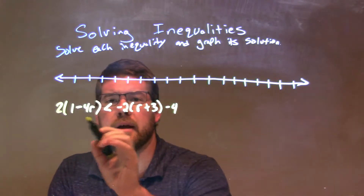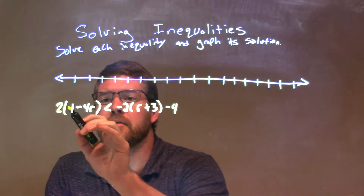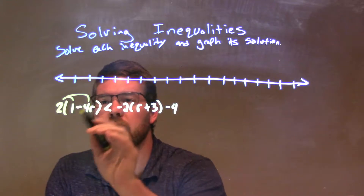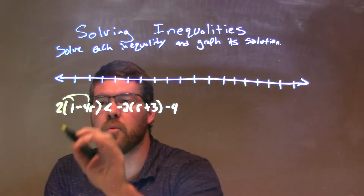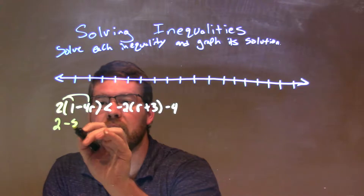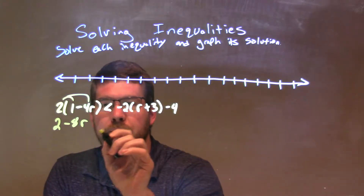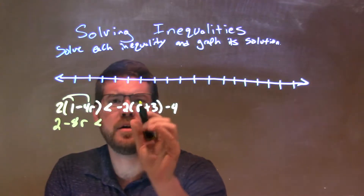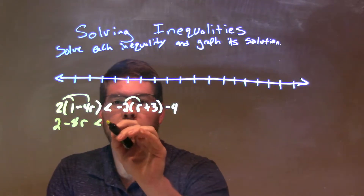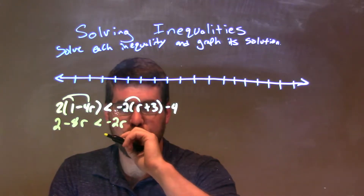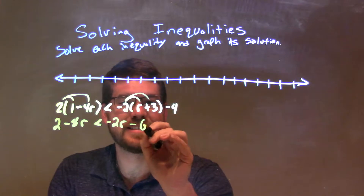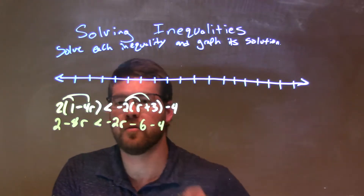What I want to do here is distribute on both of these sides. So distribute the 2 across: 2 times 1 is 2, and 2 times negative 4r is minus 8r. Then distribute the negative 2 across: negative 2 times r is negative 2r, and negative 2 times positive 3 is minus 6, and then we have a minus 4 left over.